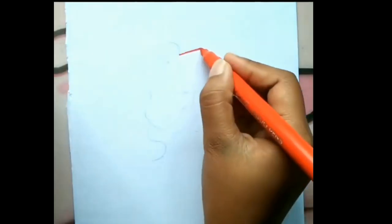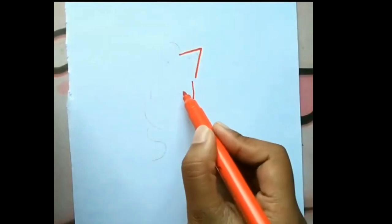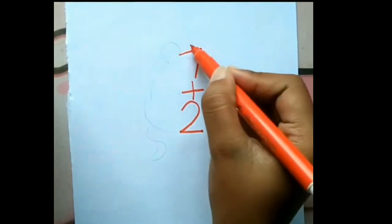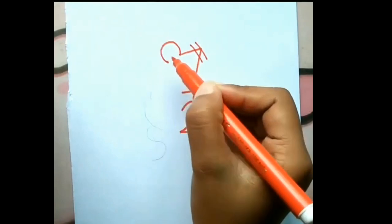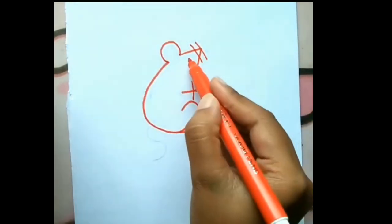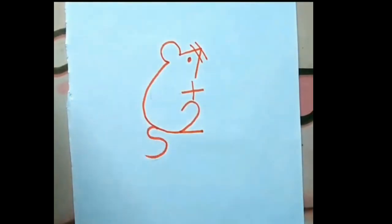A number 7, plus, the number 2, equals, the number 9. Draw an eye. Draw a tail. Is it very simple? Do it.